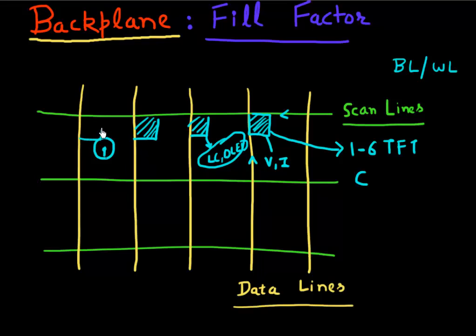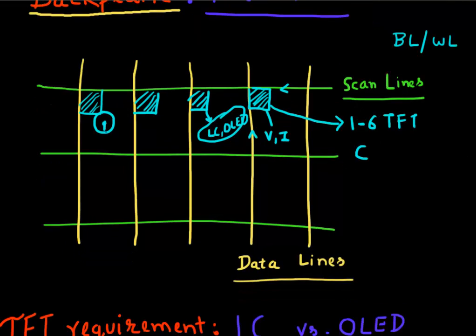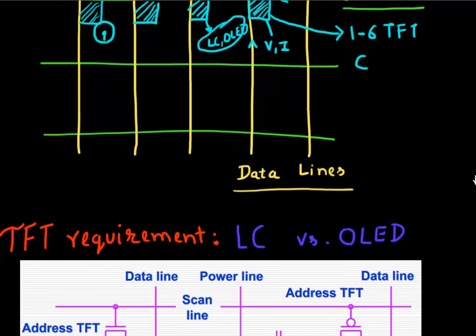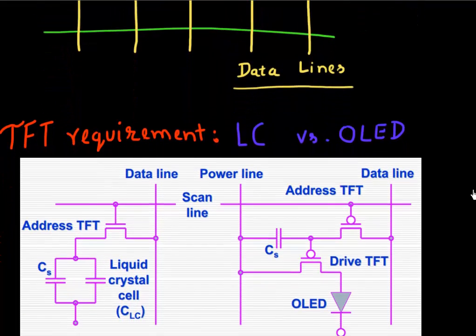So it's an important term to minimize - the percentage of area which is occupied by this control circuitry. As I mentioned, this control circuitry consists of multiple thin film transistors and capacitors, and there's a bifurcation in the requirement for this control circuitry.